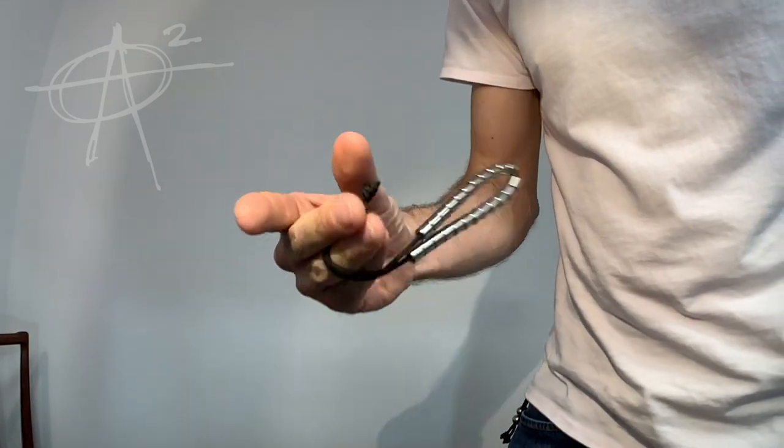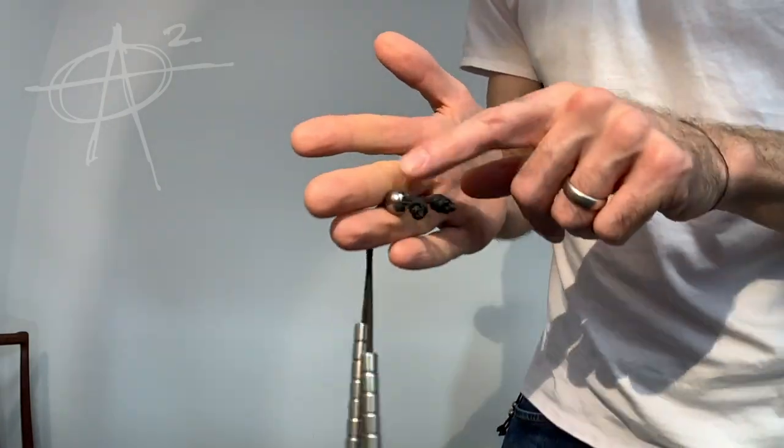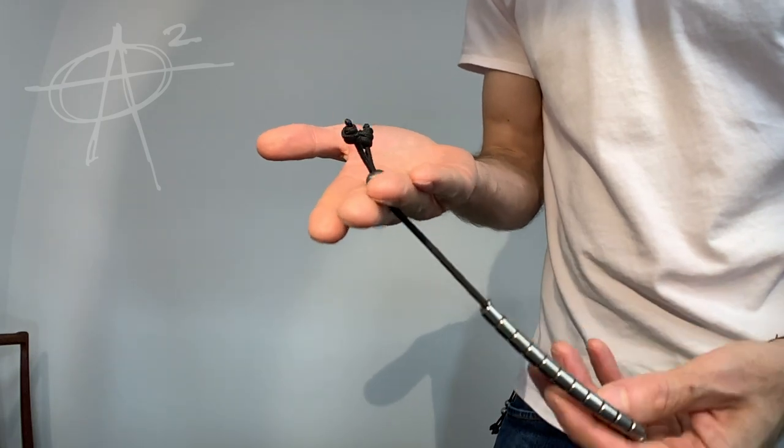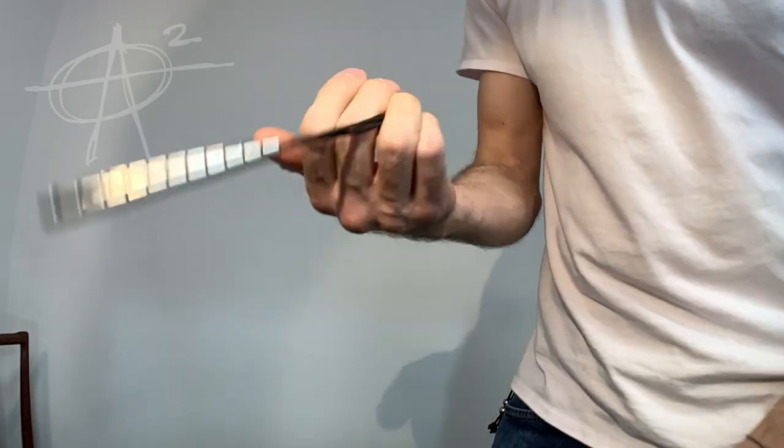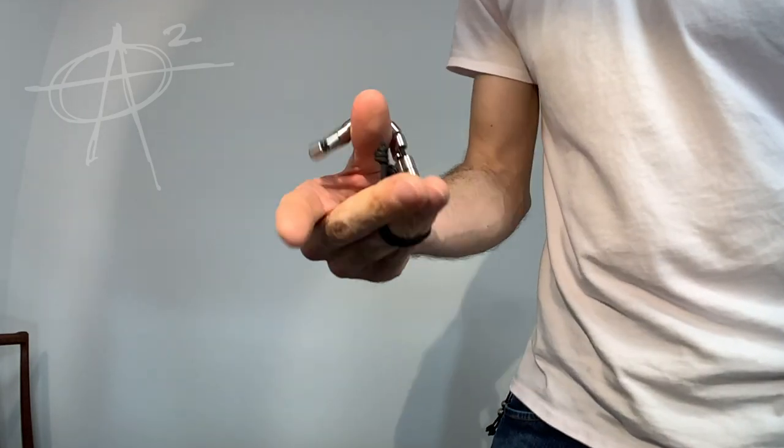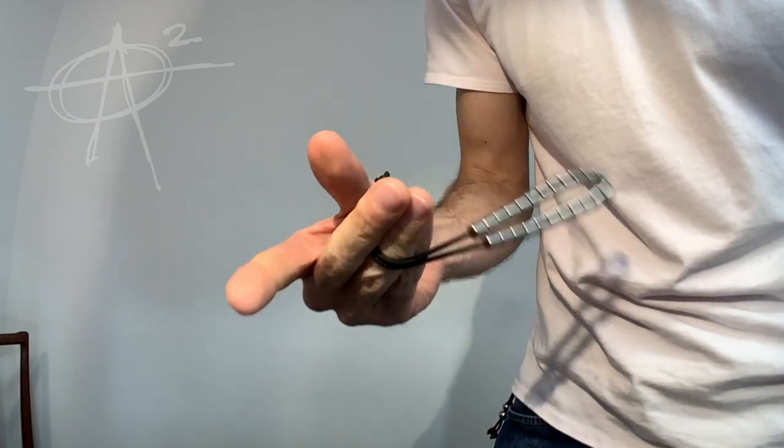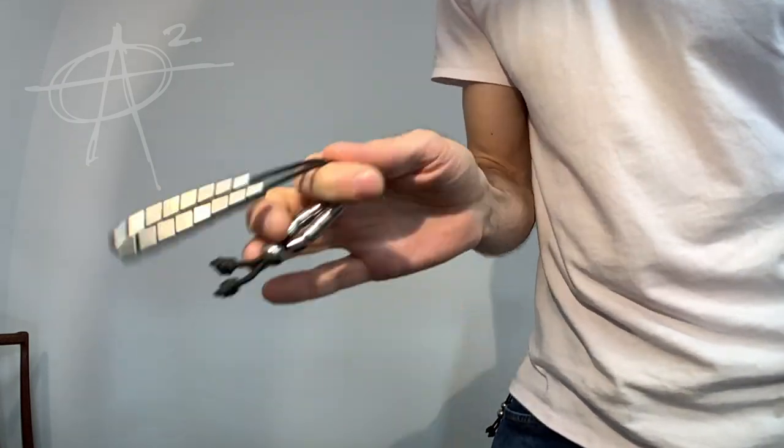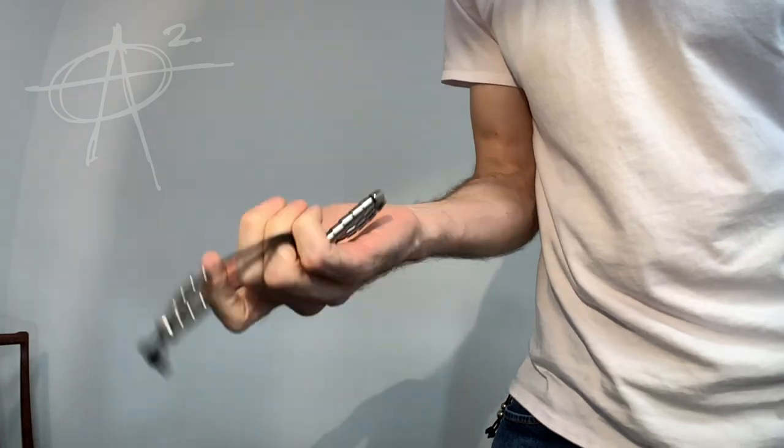All right, so all of these moves that we've talked about so far are using this kind of boss bead grip, where you're gripping one main bead and the rest of them are swinging around. Getting into the next few tutorials, we'll be mixing it up a little bit more.